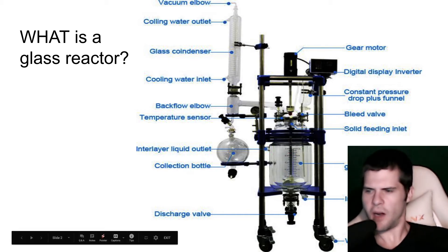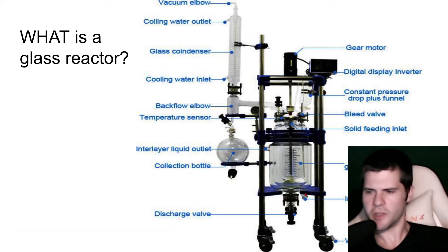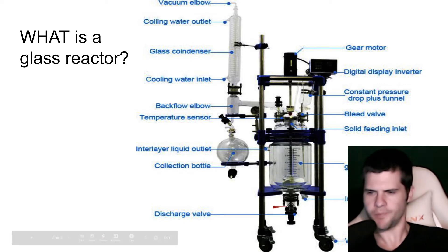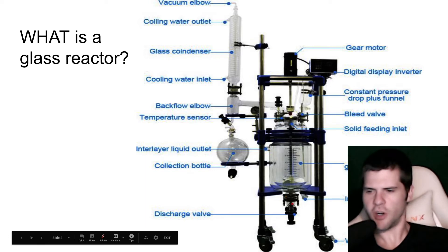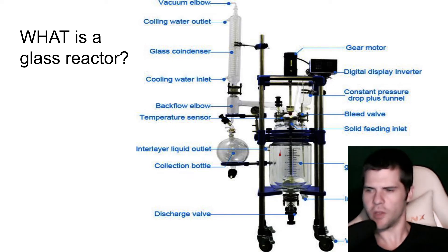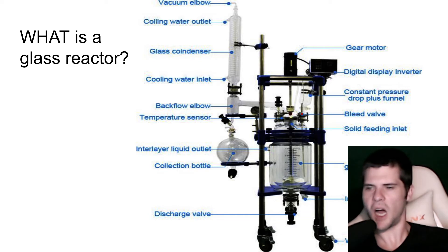Here we have our interlayer liquid inlet, which is what we are going to circulate heating or chilling fluid through in this jacket surrounding it. Here we have some wheel brakes to keep this unit from moving around. Right here you'll see the discharge valve, which will allow us to recover whatever happened inside of our reactionary vessel.